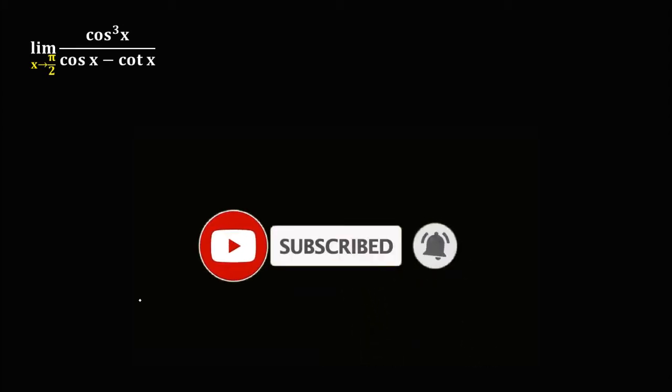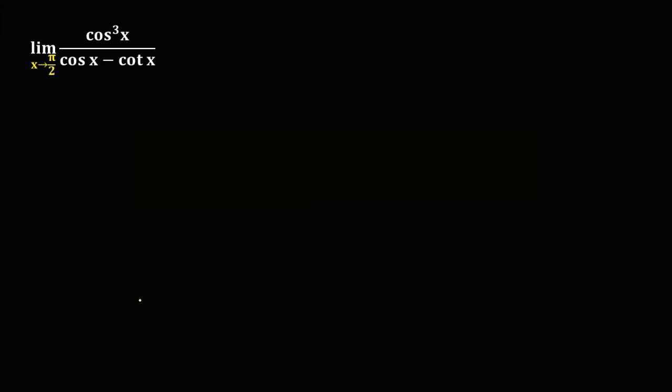Welcome to MathStoria. Let's work on this problem: the limit of cosine to the power 3x over cosine x minus cotangent x, as x approaches pi over 2.